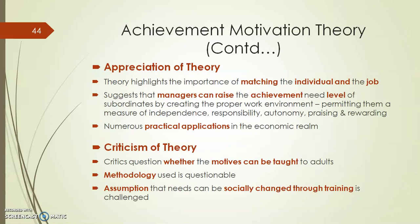Now let us evaluate the theory. First, appreciation: this theory highlights the importance of matching the individual to the job. By identifying whether a person's need category is power, affiliation, or achievement, we can match them appropriately. This theory also suggests that managers can raise the achievement need level of subordinates by creating a proper work environment, permitting them a measure of independence, responsibility, and autonomy, and by praising and rewarding them. There are also numerous practical applications of this theory in the economic realm.